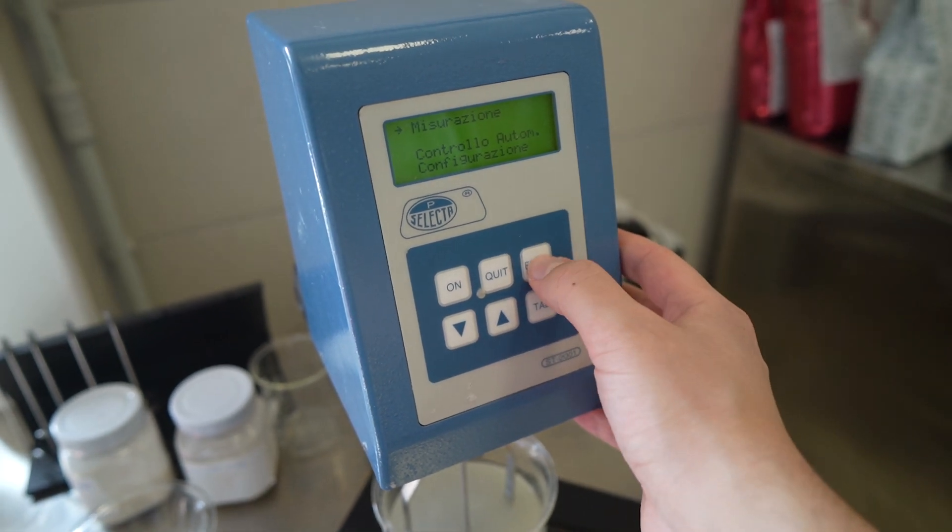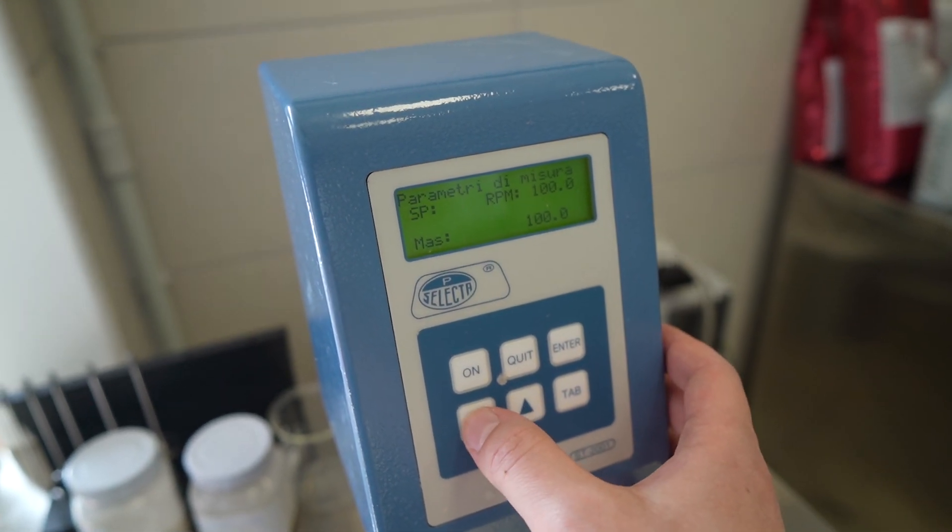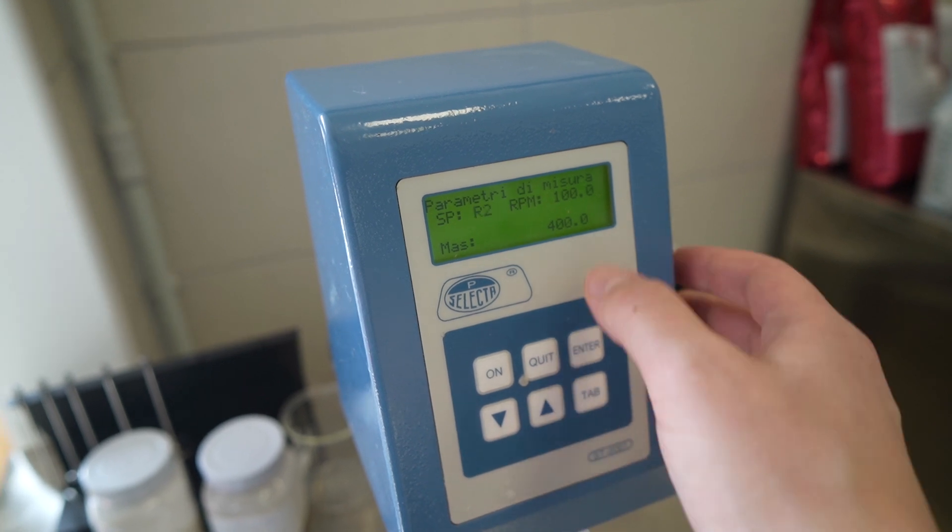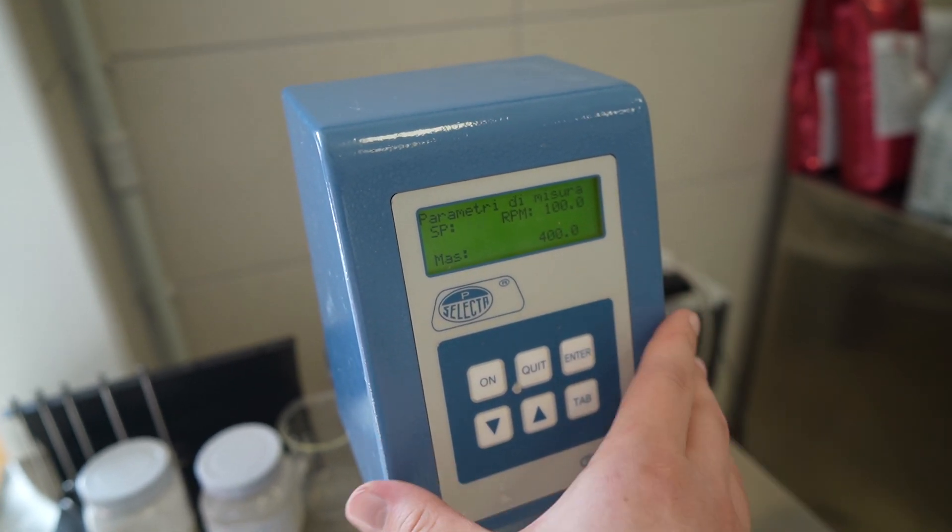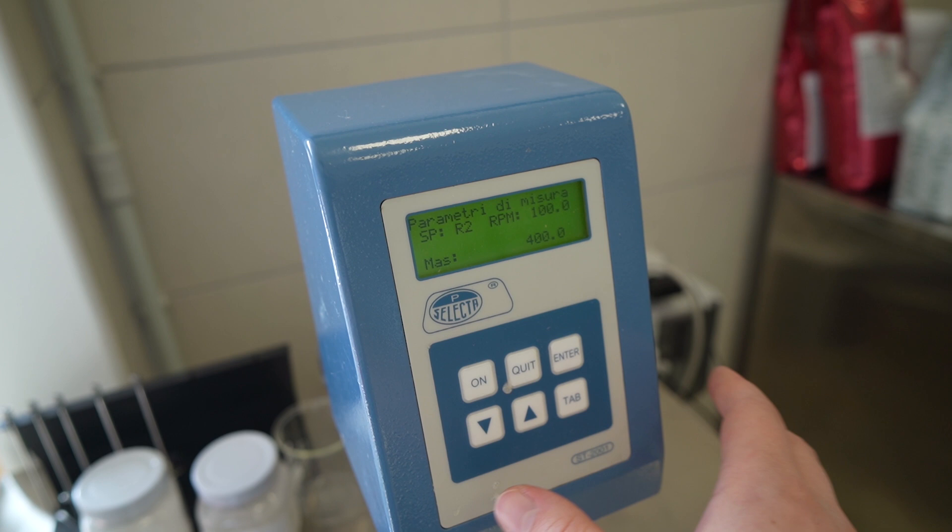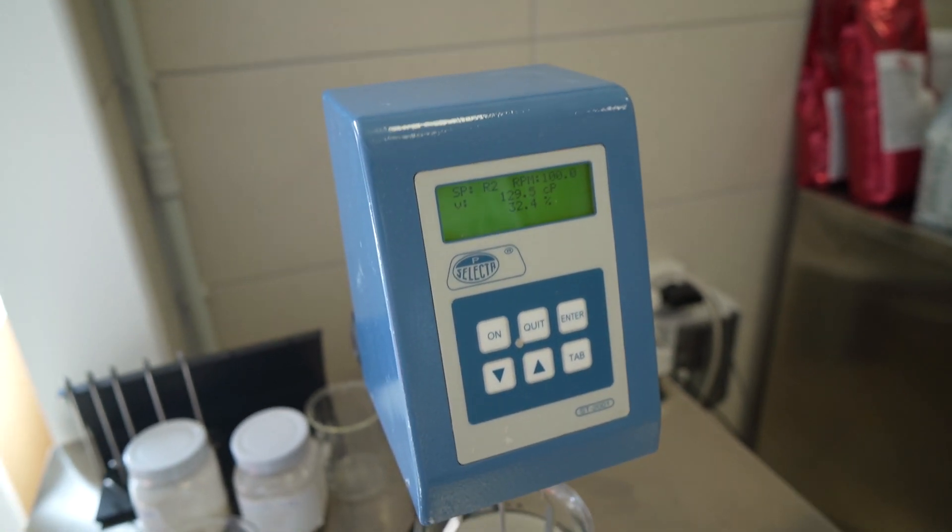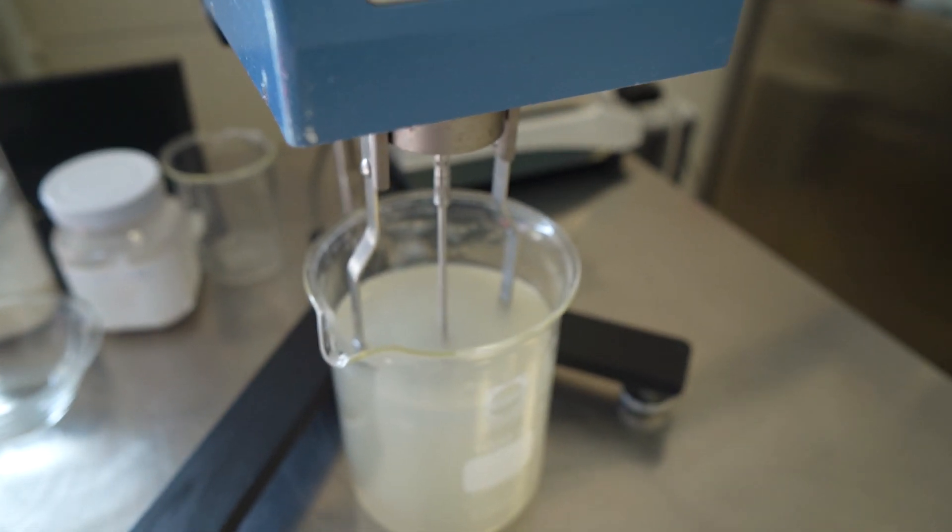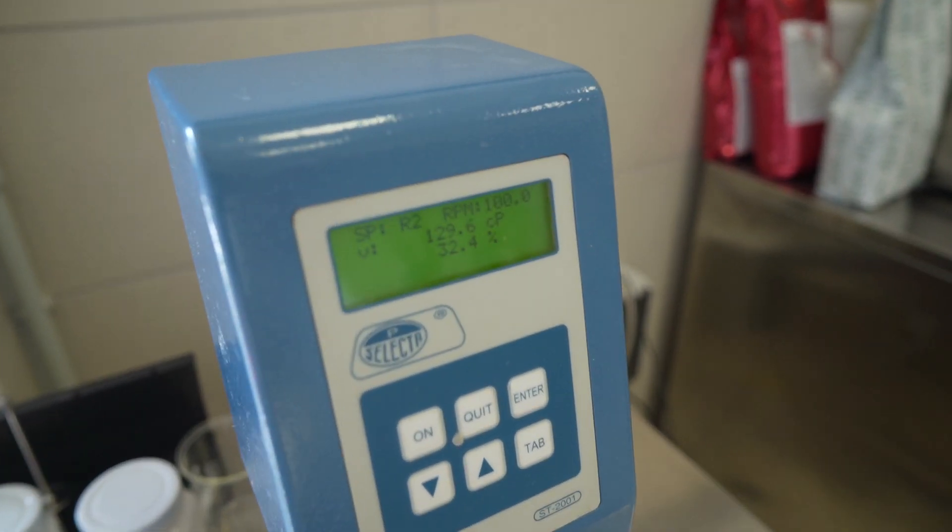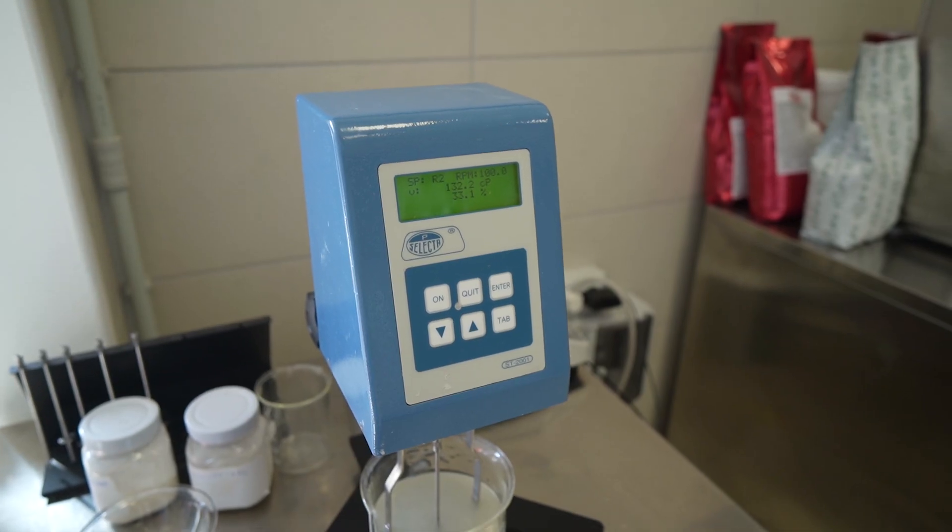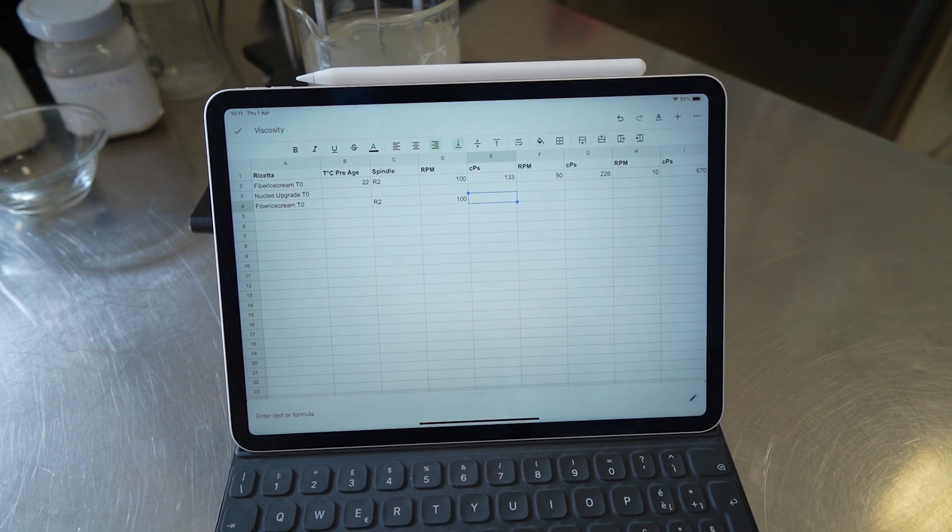Now I activate the viscosimeter and go into measurement. I select the spindle I'm using, which is R2, and then the speed, the rotations per minute. I will measure at three steps: 100, 50, and 10 RPM. Then I press on. Now it's starting to rotate, you can barely see it. After a while it will give us a reading in centipoise. I let it spin for one minute, then do the reading and report it in our lab worksheet.